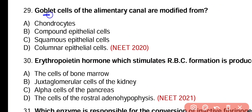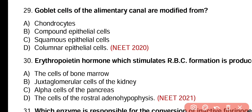Question number 29. Goblet cells of alimentary canal are modified from: chondrocytes, compound epithelial cells, squamous epithelial cells, or columnar epithelial cells? Correct answer is option D. Goblet cells are modified columnar epithelial cells.